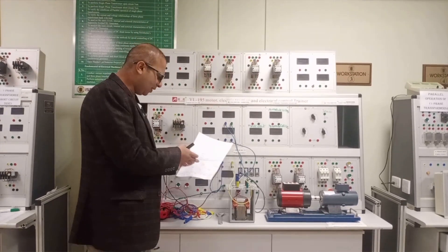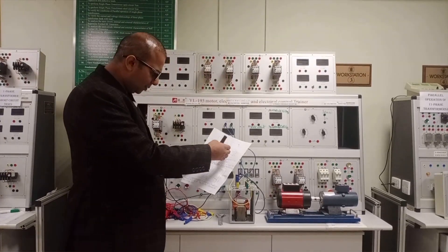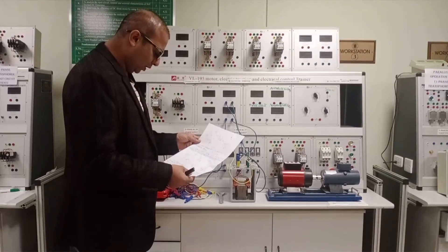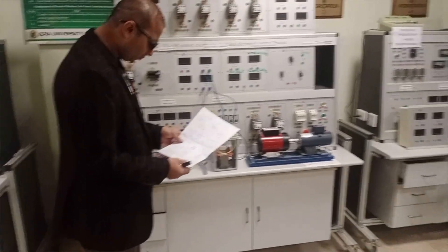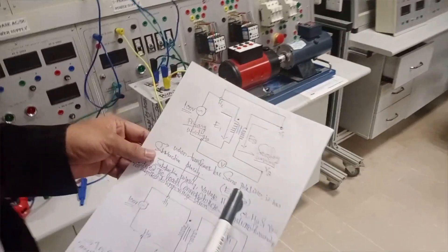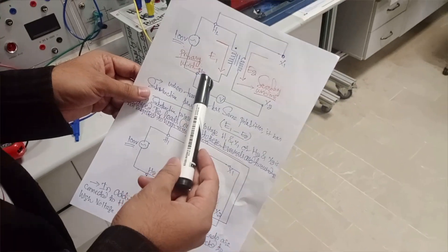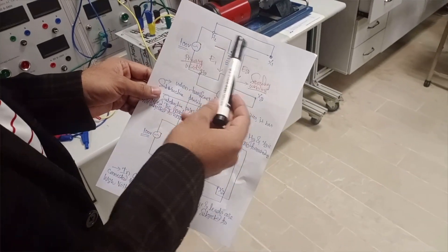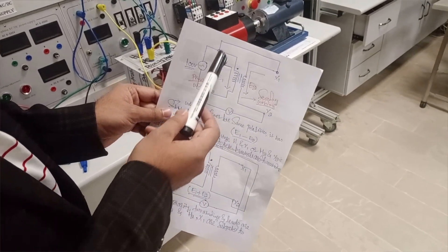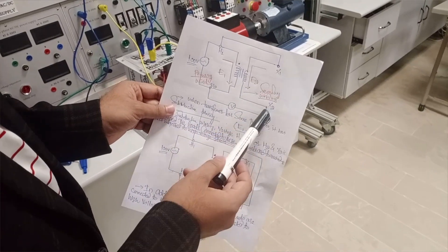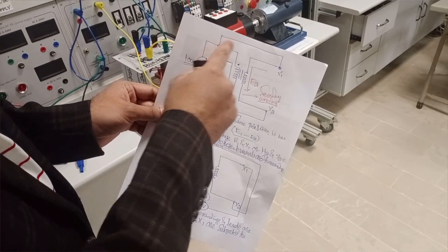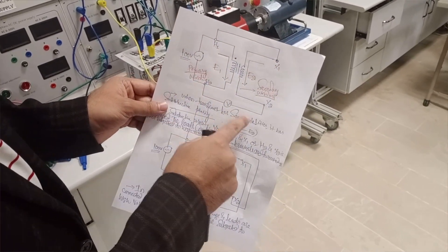Before doing this experiment we need to see the circuit diagram and how it is going to be implemented on this trainer. In the circuit diagram, the transformer has H1 and H2 as the high-voltage primary terminals connected to the supply side, and X1 and X2 as the secondary winding terminals. For same polarities, H1 is connected with X1 and H2 is connected with X2.